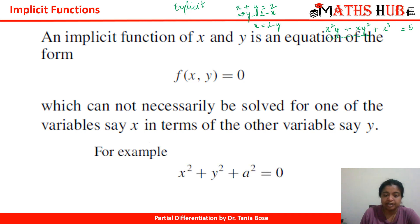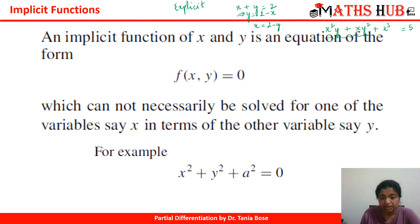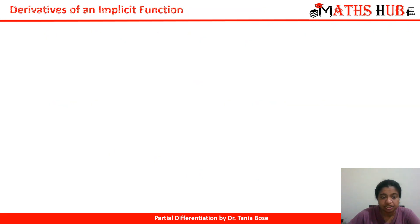For example, x² + y² + a² = 0 — from here you can easily extract y in terms of x or x in terms of y, so this is a case of an explicit expression. But if you attach an x·y term, it becomes a little tedious to calculate x in terms of y, and that leads us to how to differentiate these implicit functions.